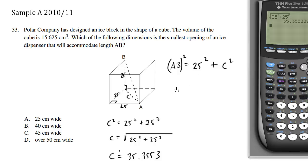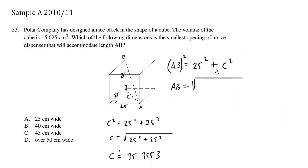So AB is equal to the square root of 25 squared plus C squared. And we have C squared over here.